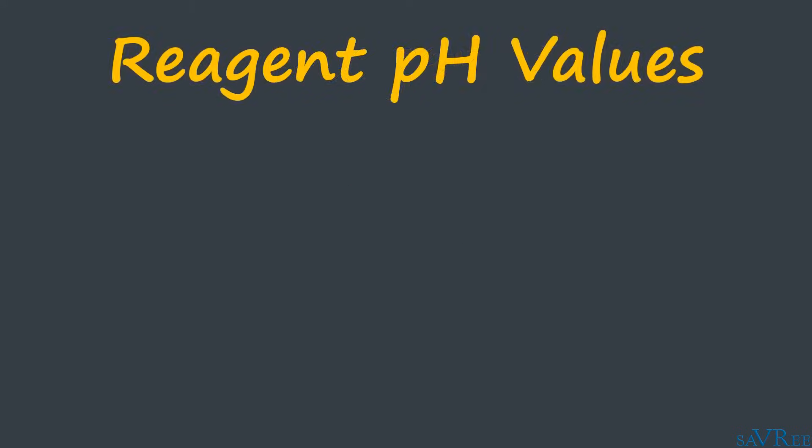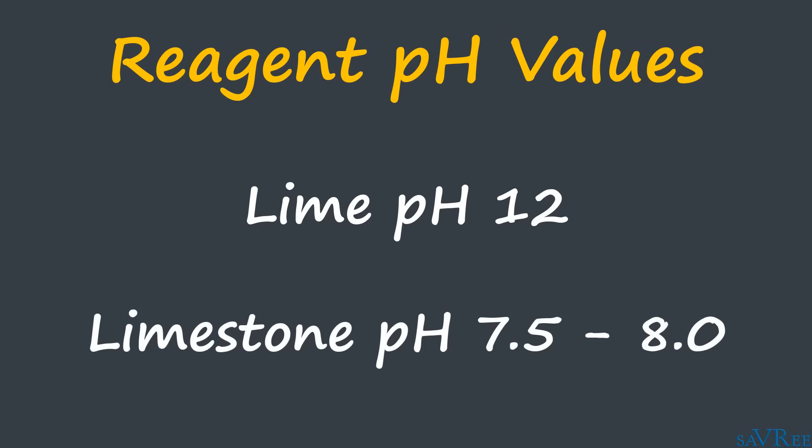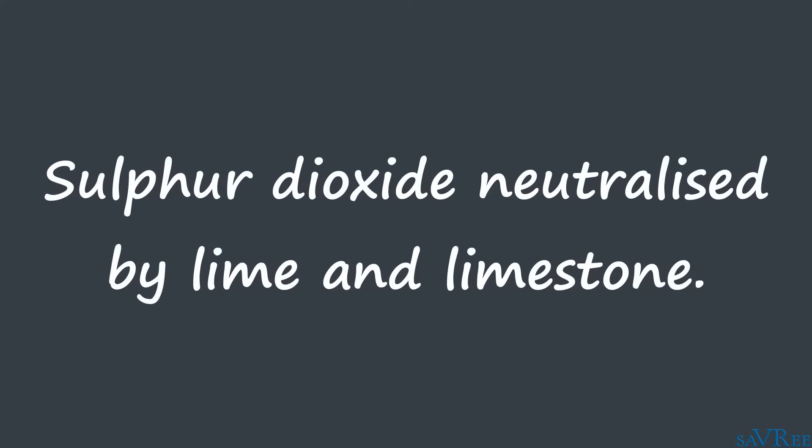Lime has a pH of about 12, so it is very alkaline. Limestone has a pH level slightly above neutral, somewhere around the 7.5 pH range. By mixing the alkaline limestone or lime with the sulfur dioxide gas, we bring up the pH level of the sulfur dioxide gas and bring it closer to seven. Once we've done that, we've neutralized the gas and we can dispose of it by selling it or perhaps sending it to a landfill site.